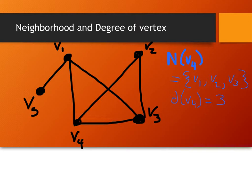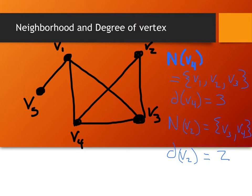Now if we look at V2: the neighborhood of V2 is {V3, V4}, so the degree of V2 is 2. You can push pause on the video and look at every single vertex in this graph to find the neighborhood and degree of each one. This would be a fair thing to ask on a quiz or test.